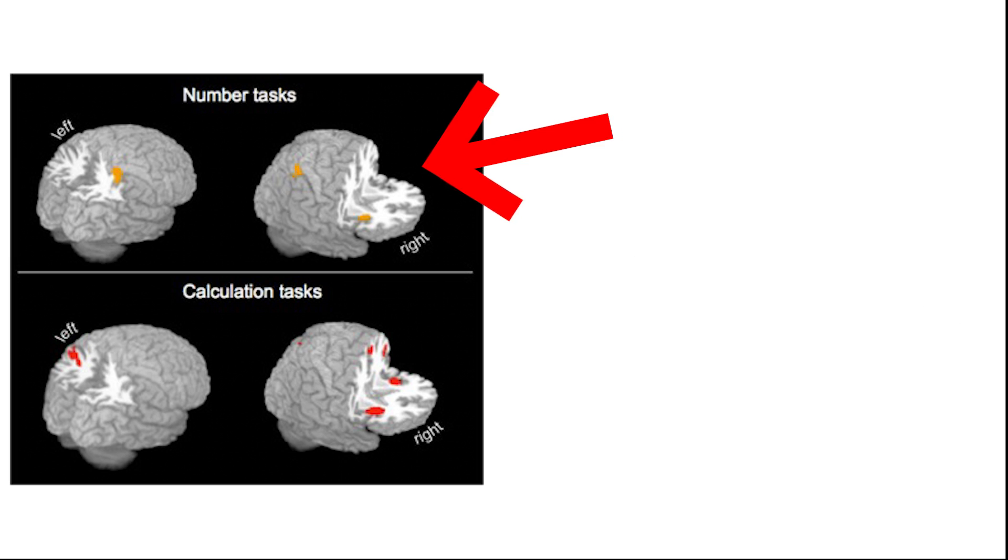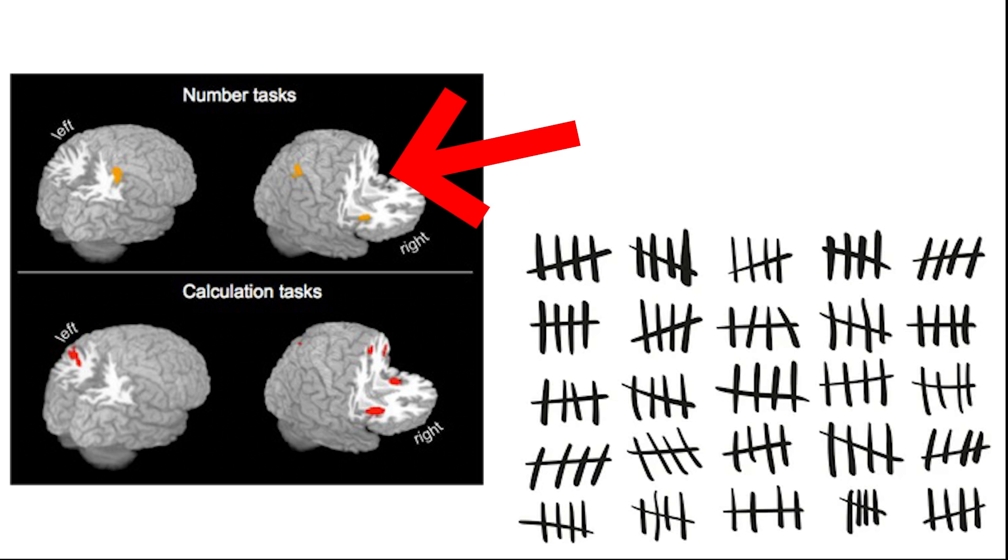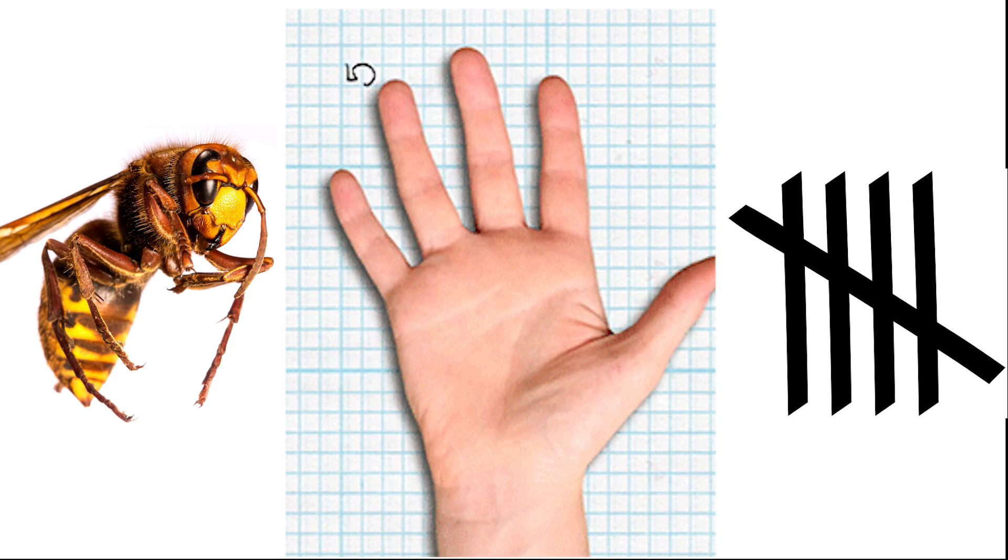So instead of relying on this, the use of tallies bypasses the cognitive task of counting and rather pairs the use of the visual and motor cortex instead. So when counting hornets, use tally marks.